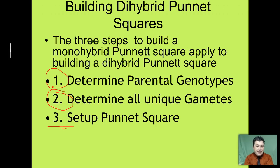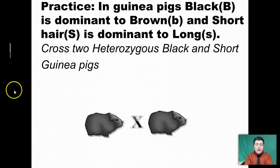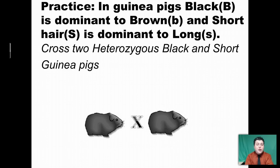Let's practice together setting up a Punnett square when looking at two traits at the same time. For our example, we're looking at guinea pigs. In guinea pigs, black is dominant to brown hair, and short hair is dominant to long. In this question, we are crossing two heterozygous black and short guinea pigs. Step one: what are the genes of our parents — what are their genotypes? They tell us that both parents are heterozygous for black and heterozygous for short. You might want to pause and see if you can determine the genotype.